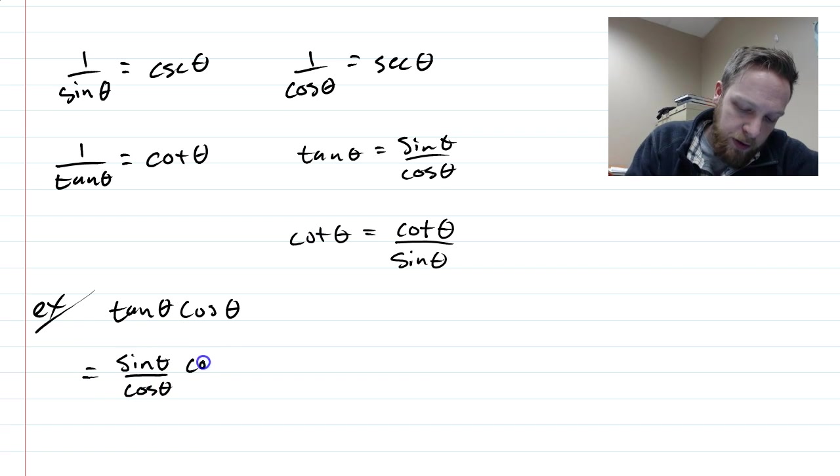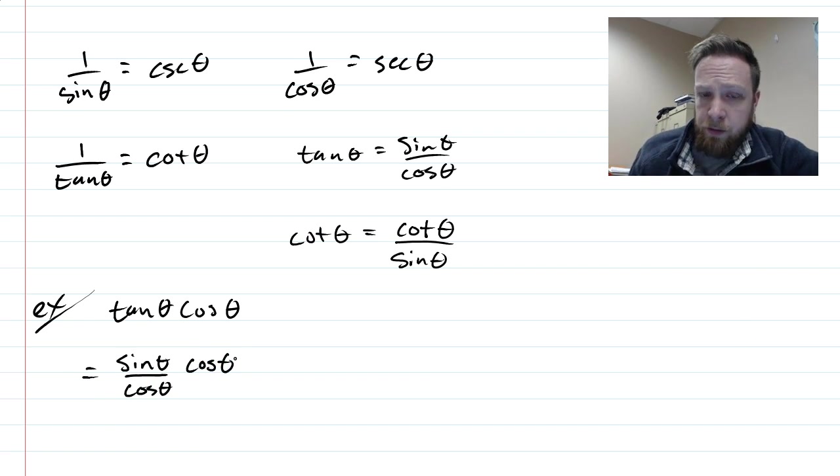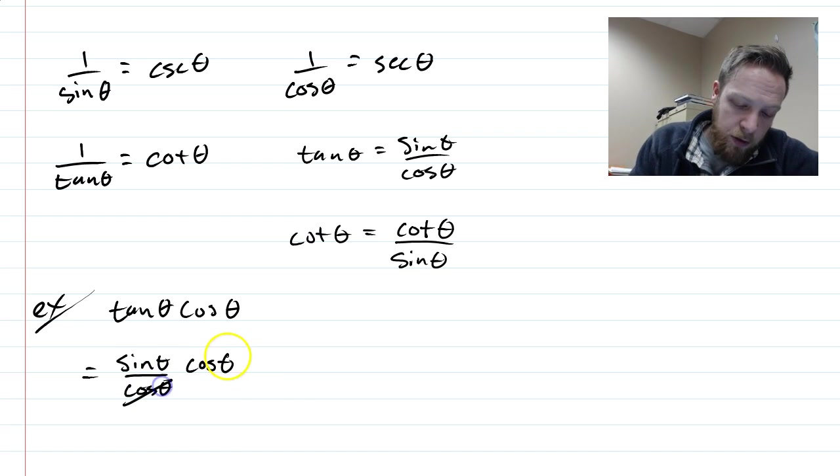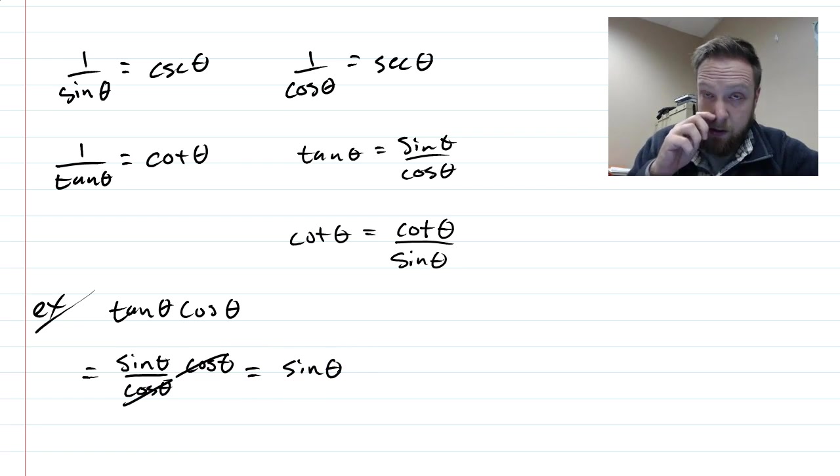So we're going to write the tangent as sin over cos, and cosine is already there. When we think of it this way, we can see that these will be canceling out. And so actually it's the same as sin θ. We have a simplification from tan θ cos θ to sin θ.